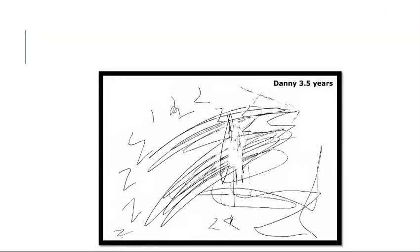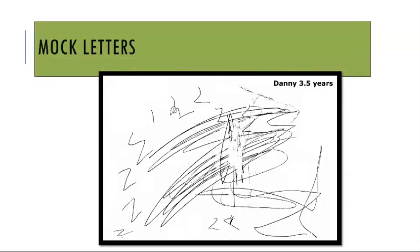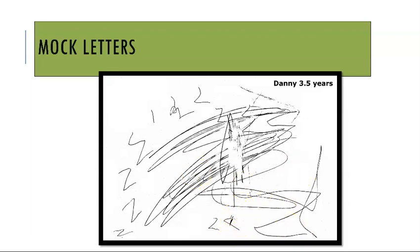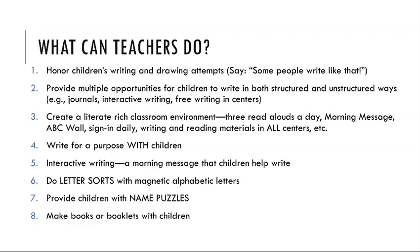The last one — where would you say this child is in terms of writing stage? This child is at mock letters because you can see some symbols that look like letters, others that look like they're almost a letter or a letter on its side. So this would be the mock letters stage.